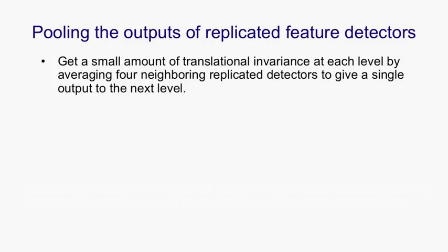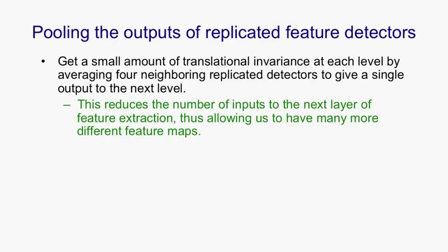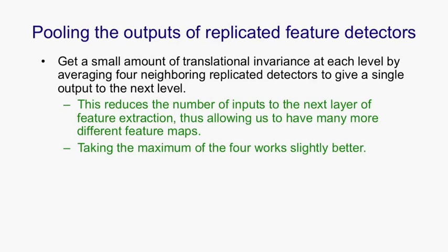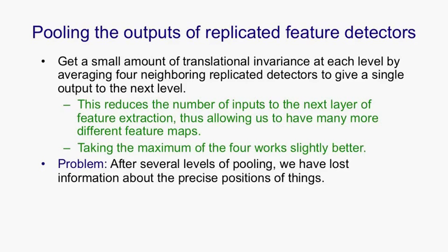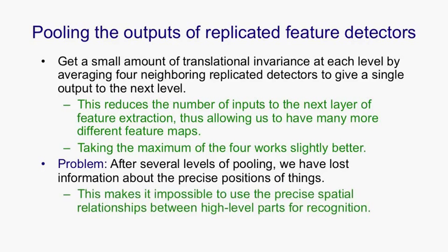One advantage of this is that it reduces the number of inputs to the next layer, so that we can have more different maps, allowing us to learn more different kinds of features in the next layer. It actually works slightly better to take the maximum of four neighboring feature detectors, rather than an average. But there is a problem, and the problem is that after several levels of doing this kind of pooling, we've lost precise information about where things are. That's okay if we just want to recognize that there's a face. The fact that we've got a few eyes and a nose and a mouth floating about in vaguely the same position is very good evidence that it's a face. But if you want to recognize whose face it is, you need to use the precise spatial relationships between the eyes and between the nose and the mouth. And that's been lost by these convolutional neural nets.